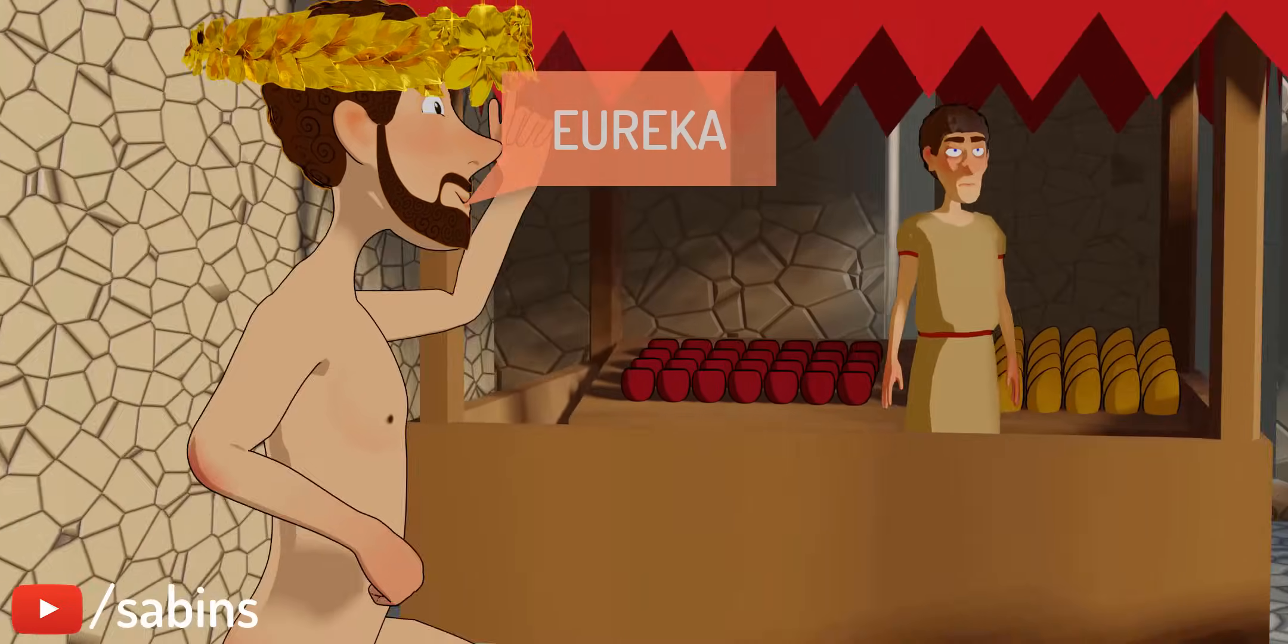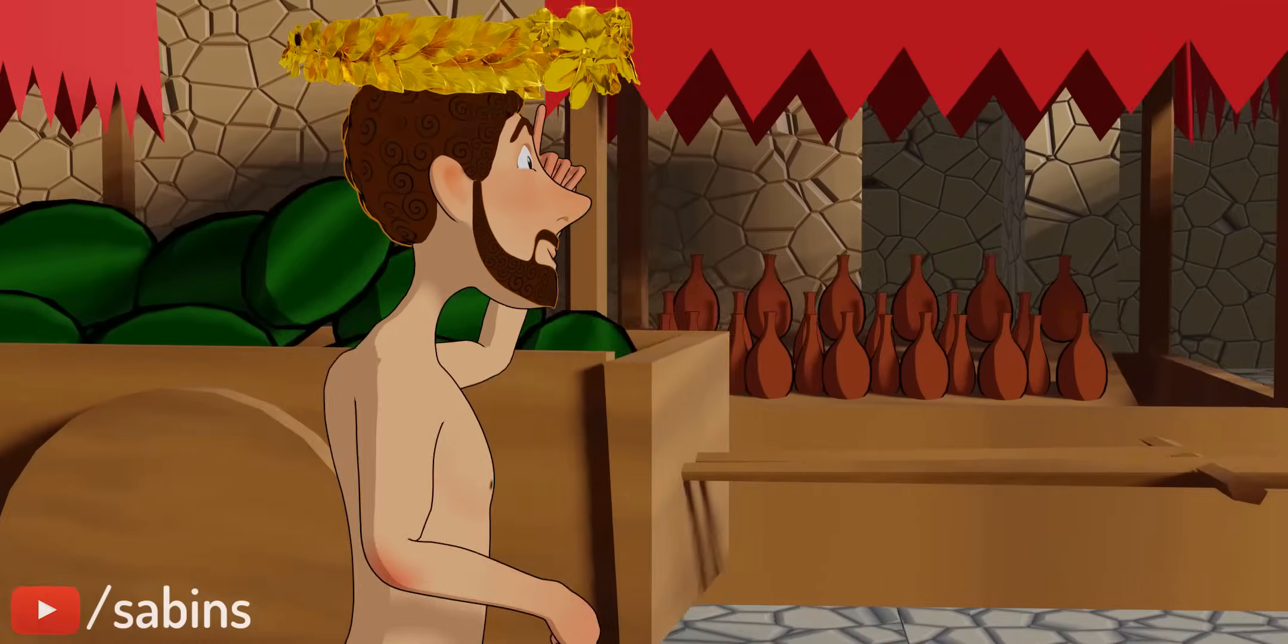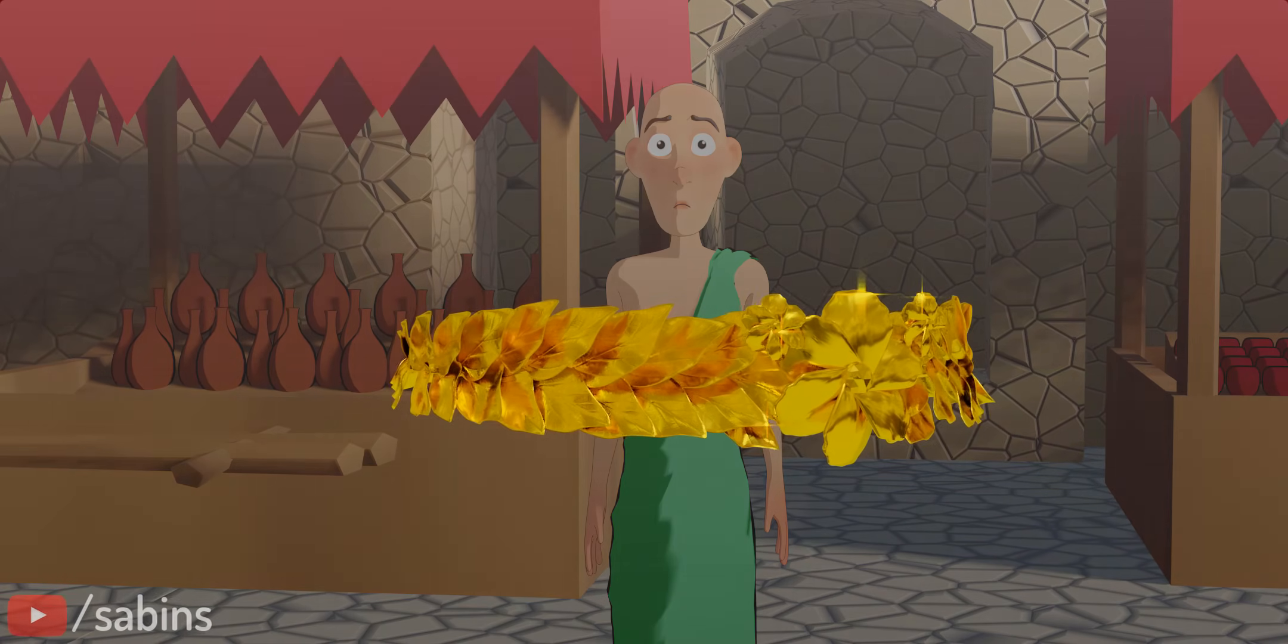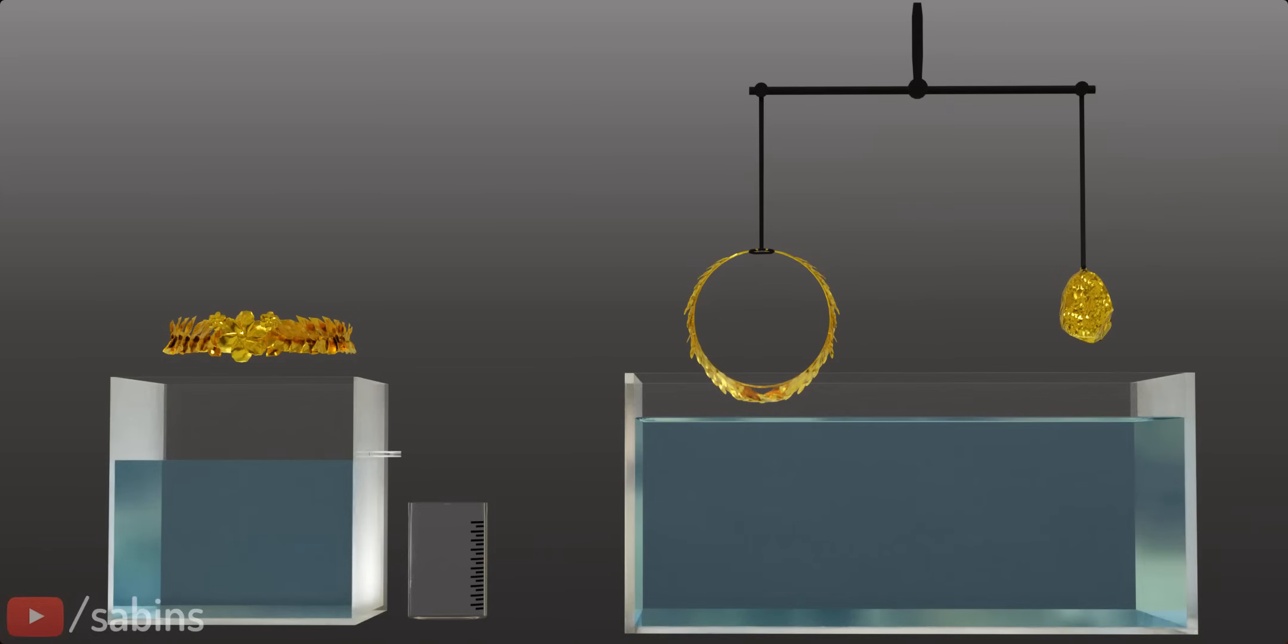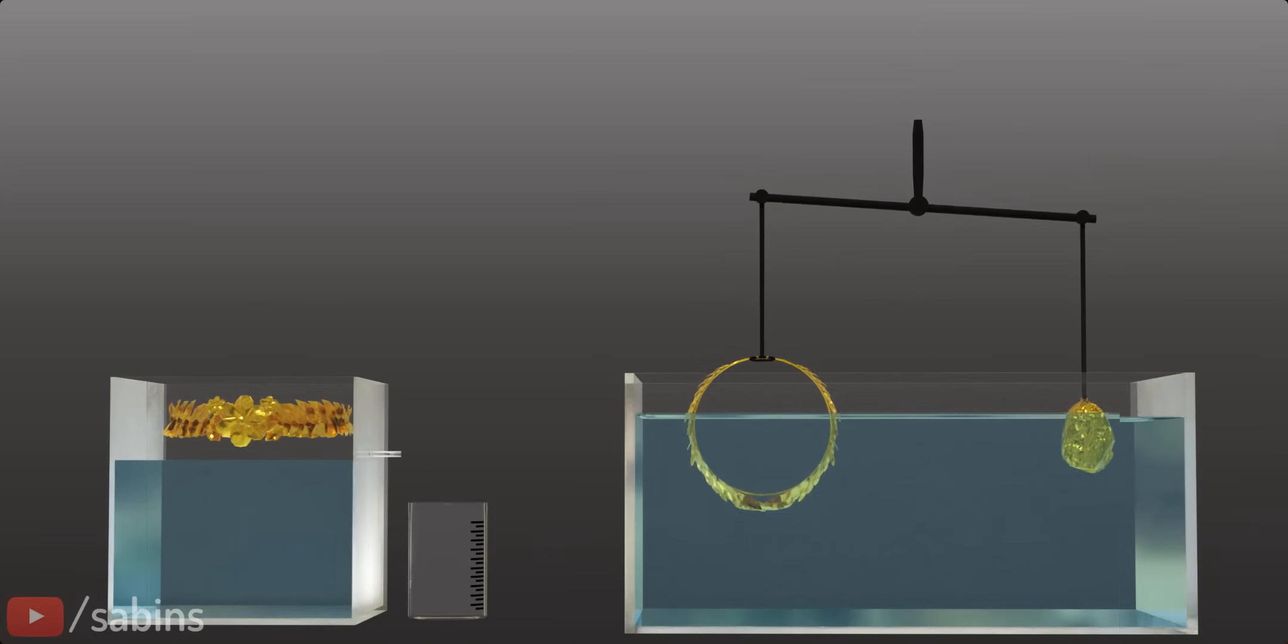Why did Archimedes get so excited about his thought experiment? What was the concept he deduced while he was taking a bath? More importantly, did Archimedes solve his king's crown problem using an immersing experiment or a float balance?